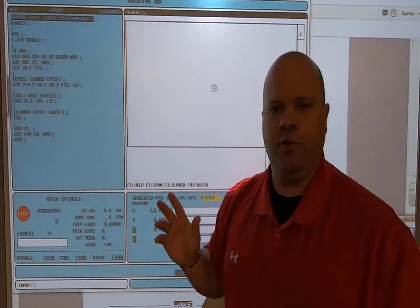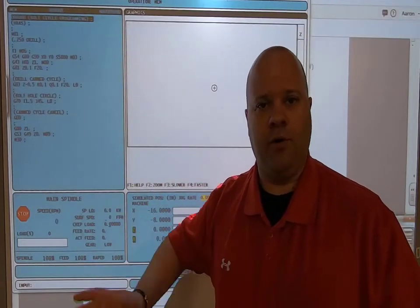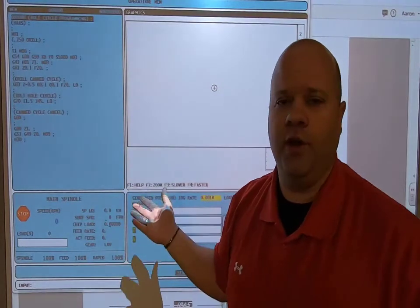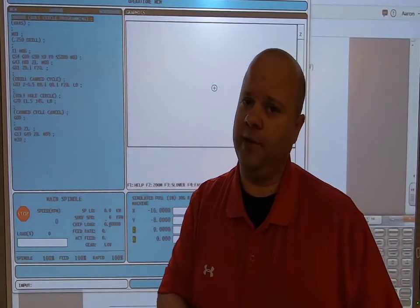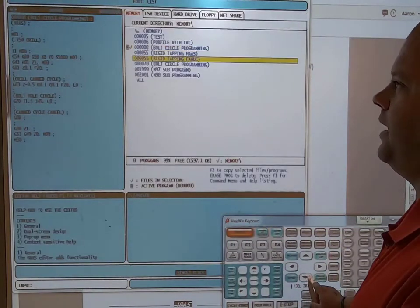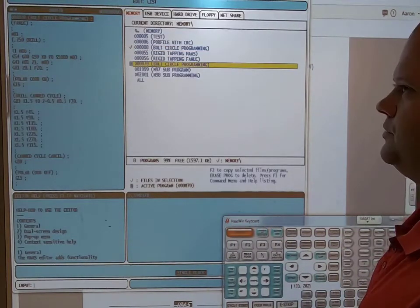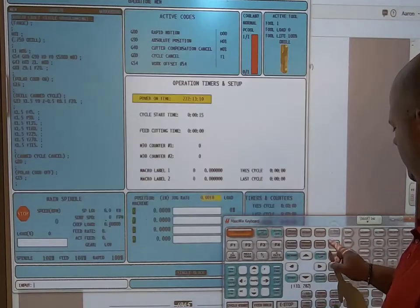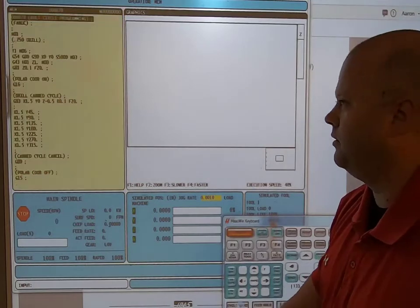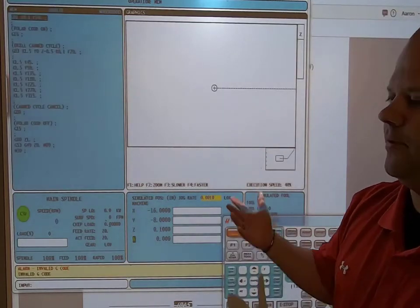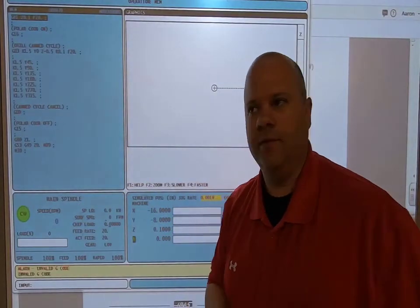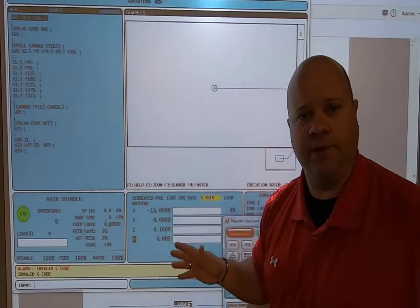Now that is how you program a bolt hole circle with a G70. Make sure that you're using the Haas and not a Fanuc because a Fanuc is going to require something different. I'm going to show you what that is. I'm going to come up to my program. I already have one made. If I want to hit cycle start, I'm going to have an alarm because it does not recognize a G16 for the application that I'm using it for.